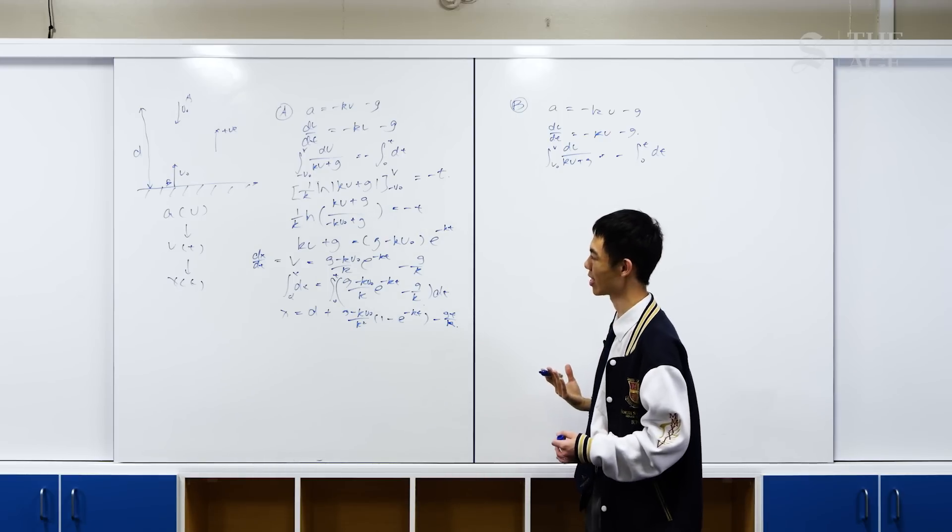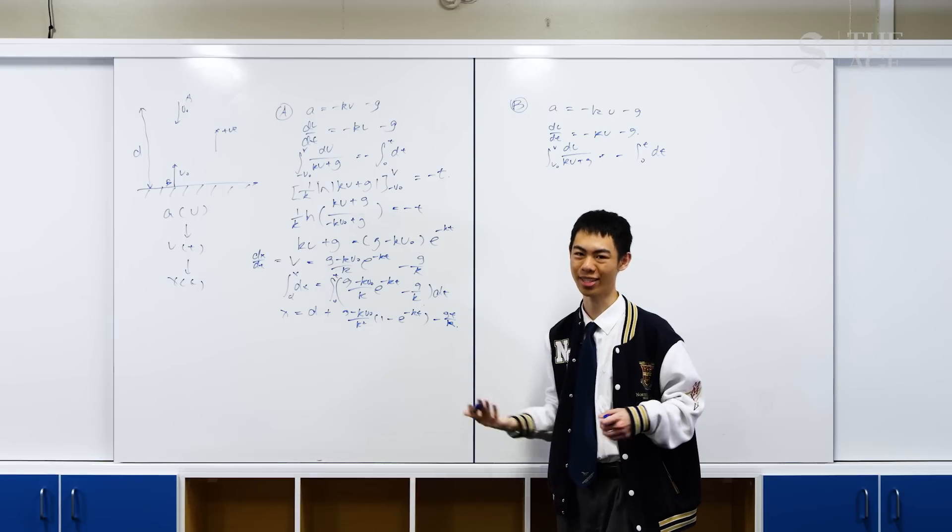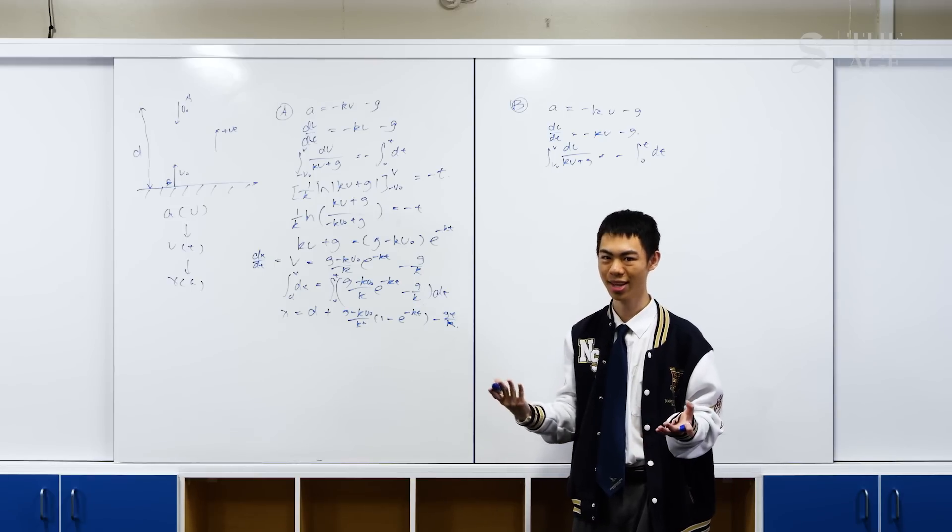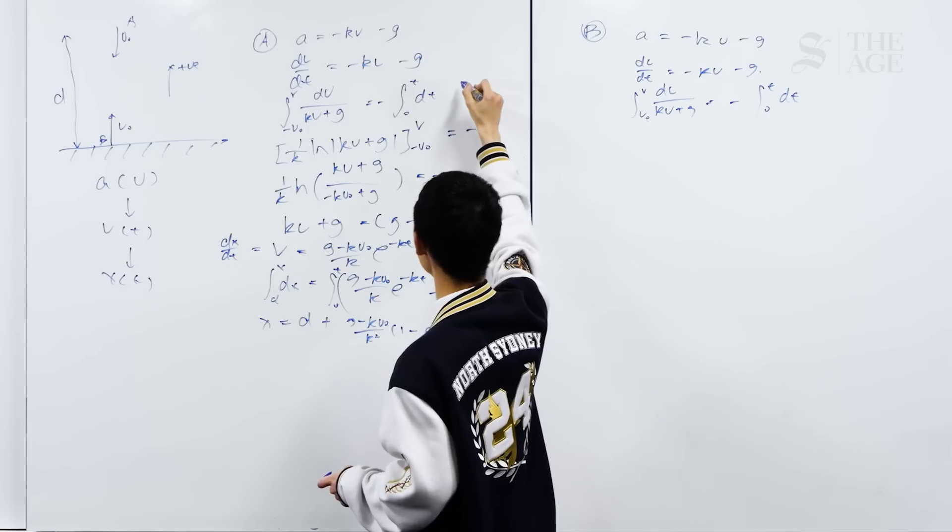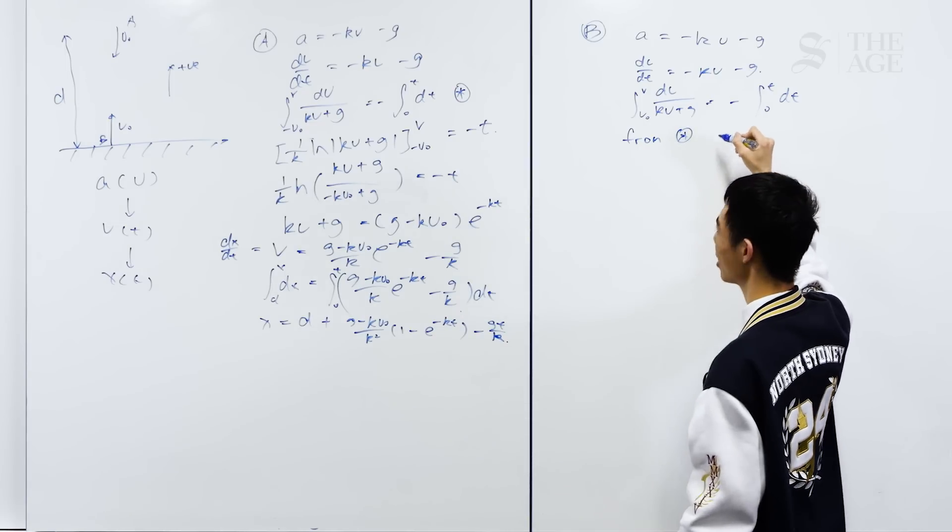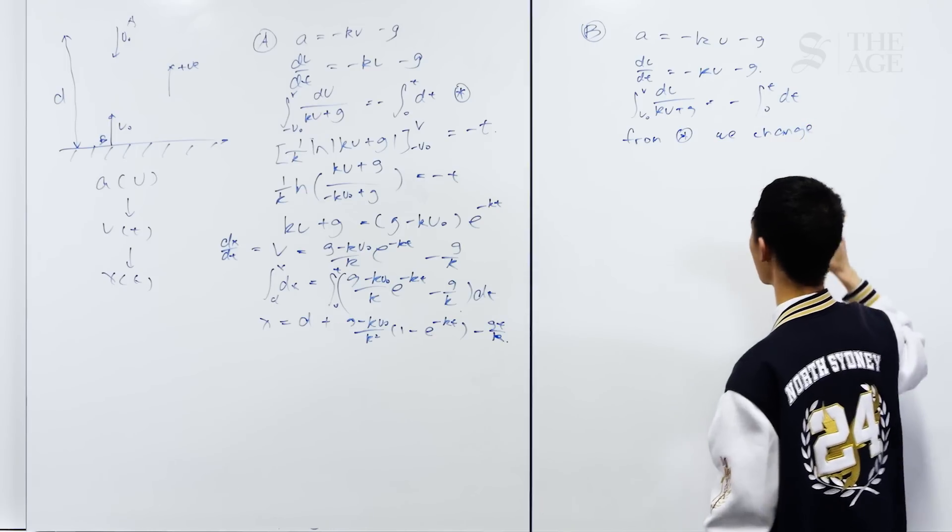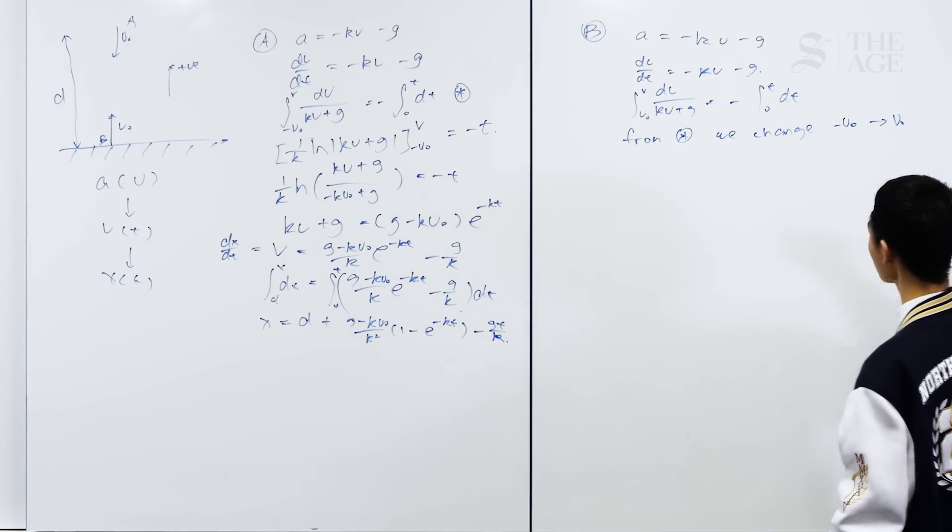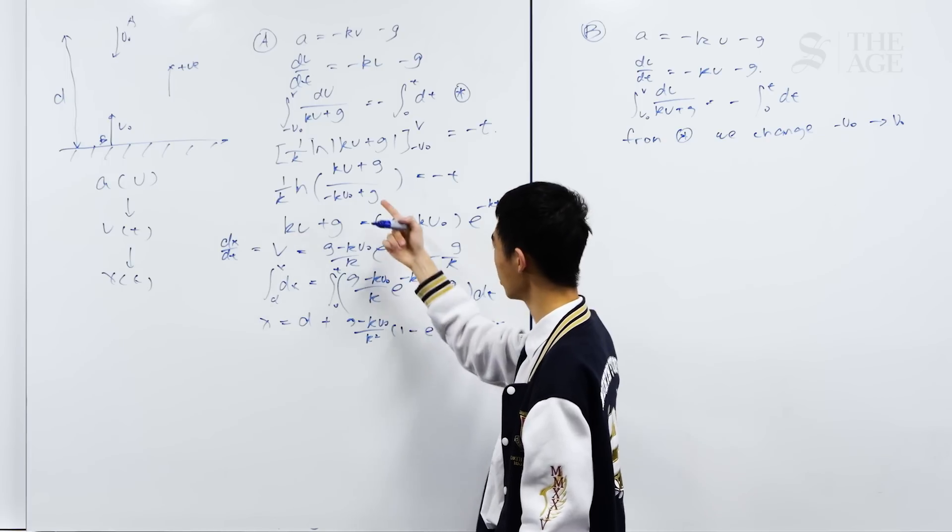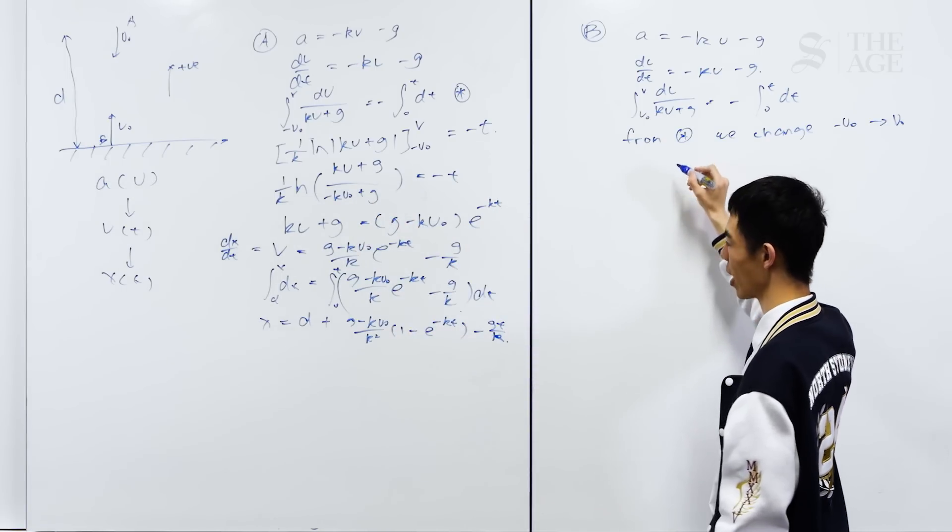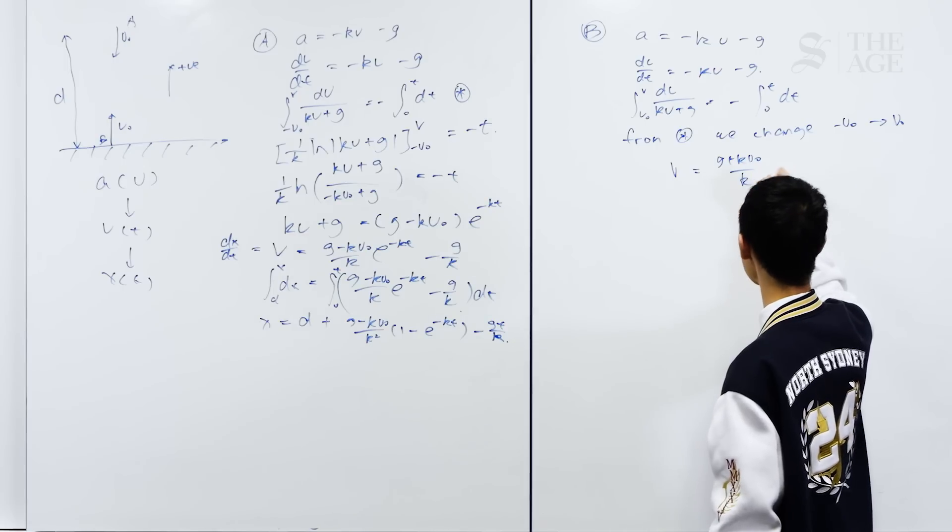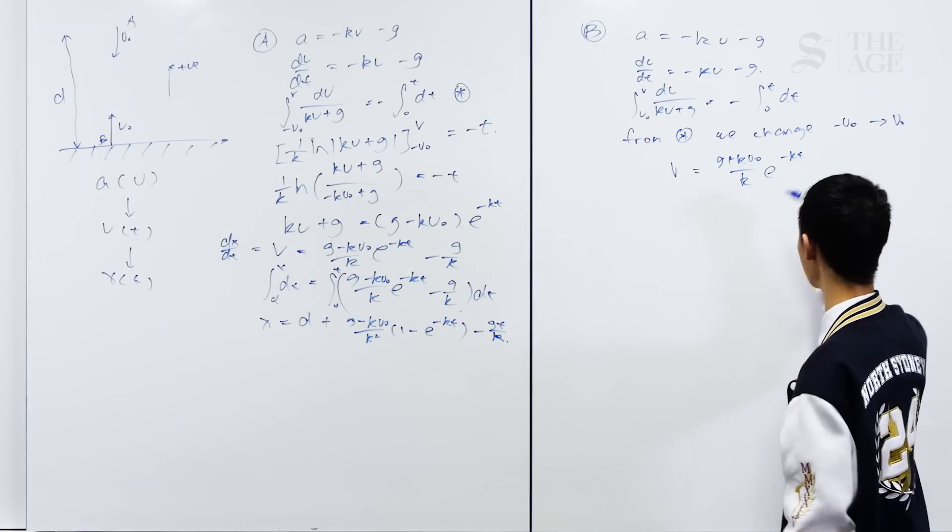This is a very big time-saving step that you can do in this question. As a general tip, whenever you have an integral, before going straight into trying to do it, you should always try to look for relationships to other integrals, perhaps ones you've already done. Those can be a big time-saving step. Here I will label this as star. We can see that from star, we only change negative v0 into v0. That means that all these computations we did are also the same, and the only difference is that we're changing the negative v0 into a v0. So we can directly write the line v equals [(g + kv0)/k]e^(-kt) - g/k.